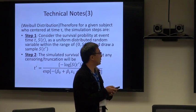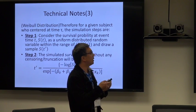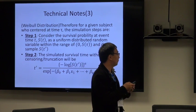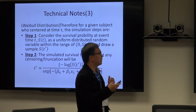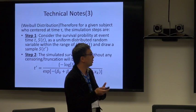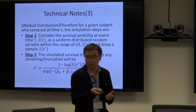For a given subject who is censored at time tau, we can consider the survival probability at event time t as a uniformly distributed random variable within the range of 0 to S(tau). In the first step, we simply draw a sample from this uniform distribution, S(t'). In the second step, we back-calculate the survival time.